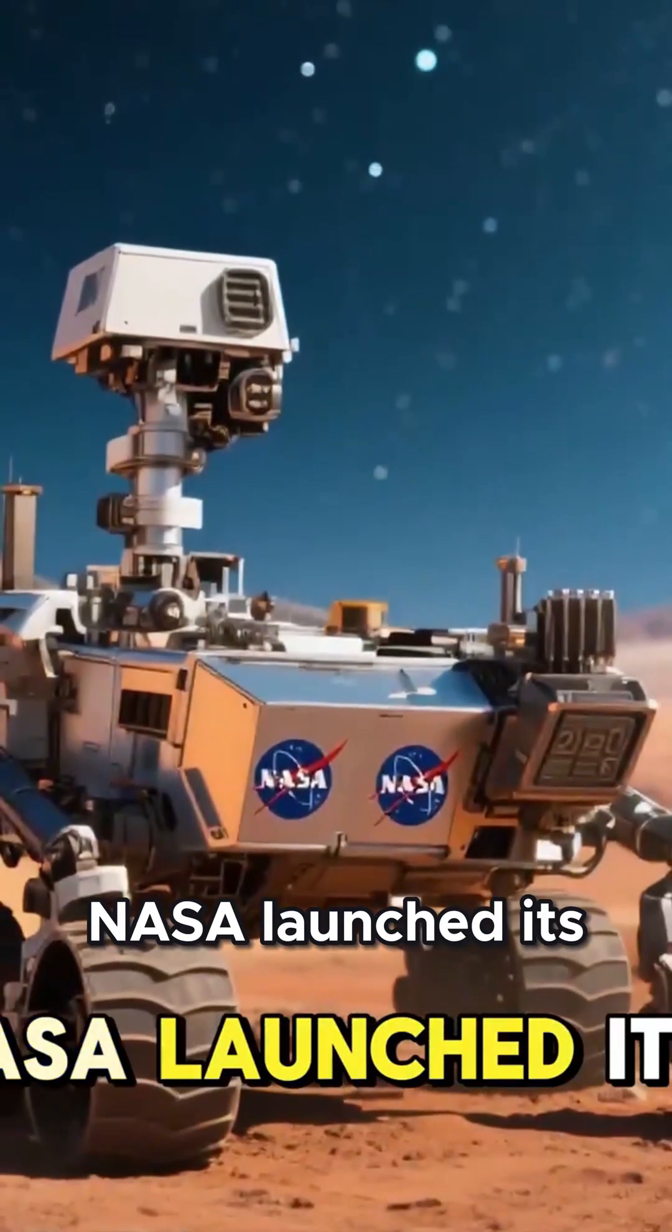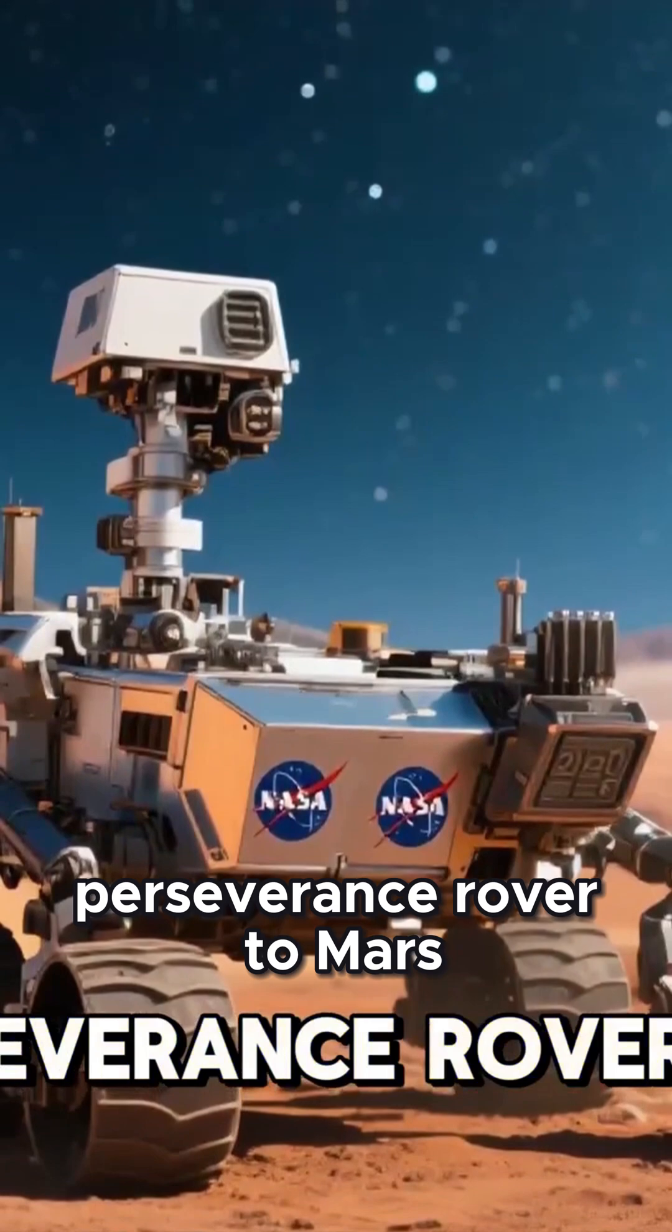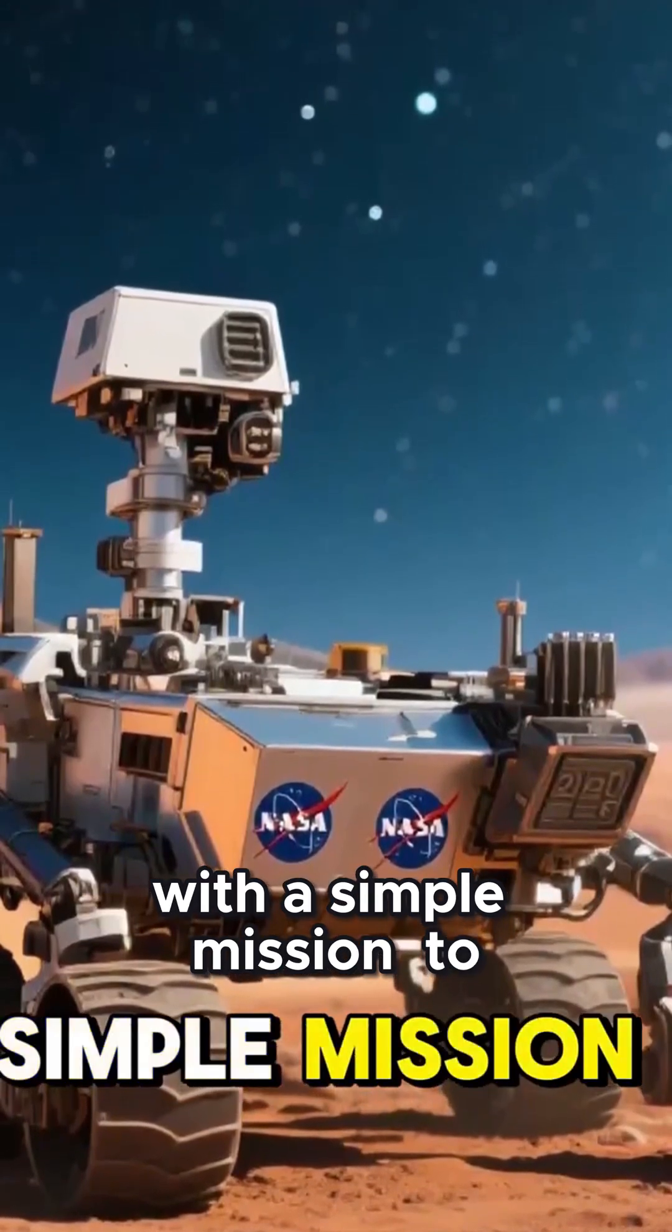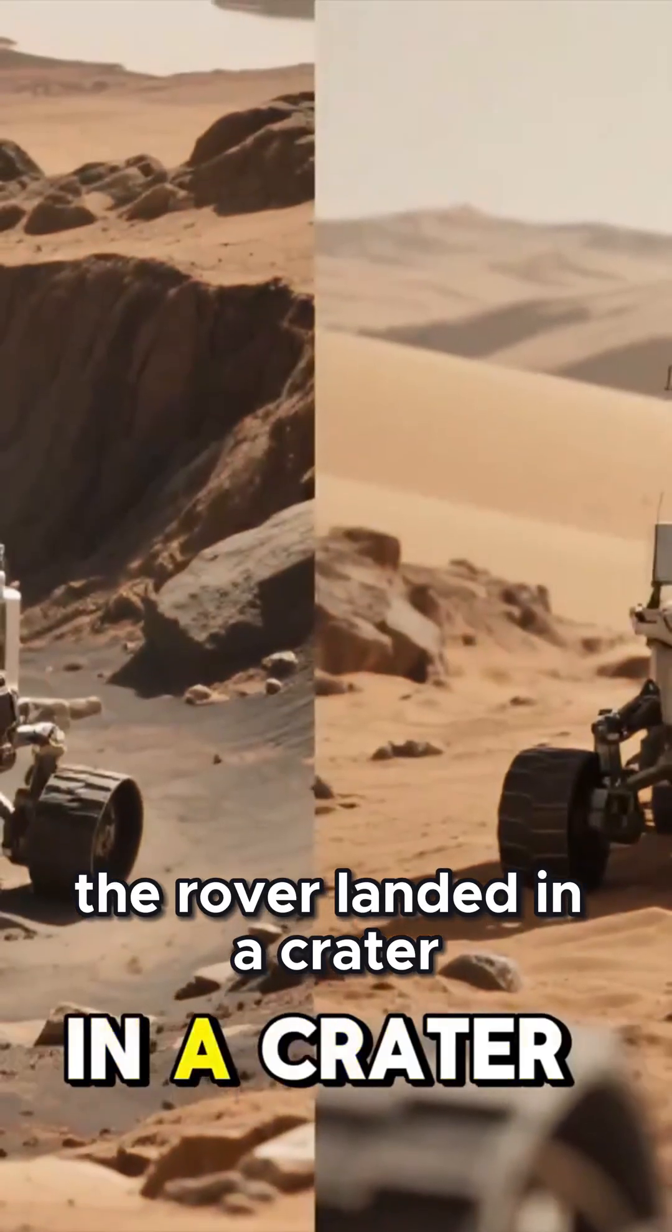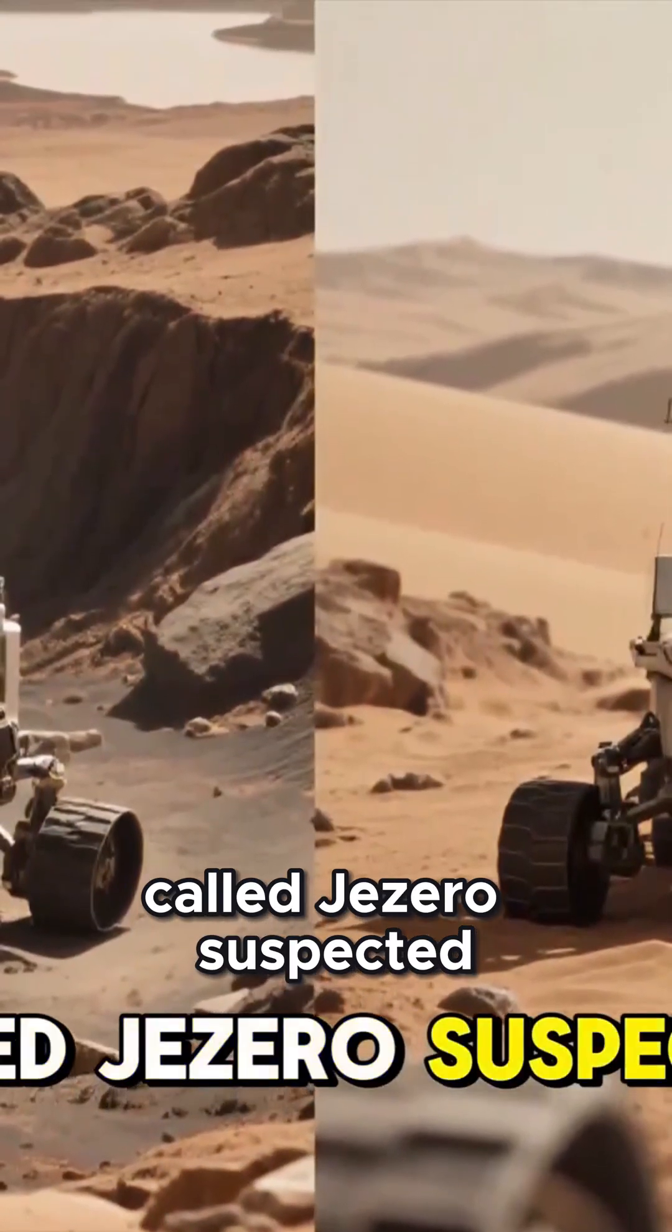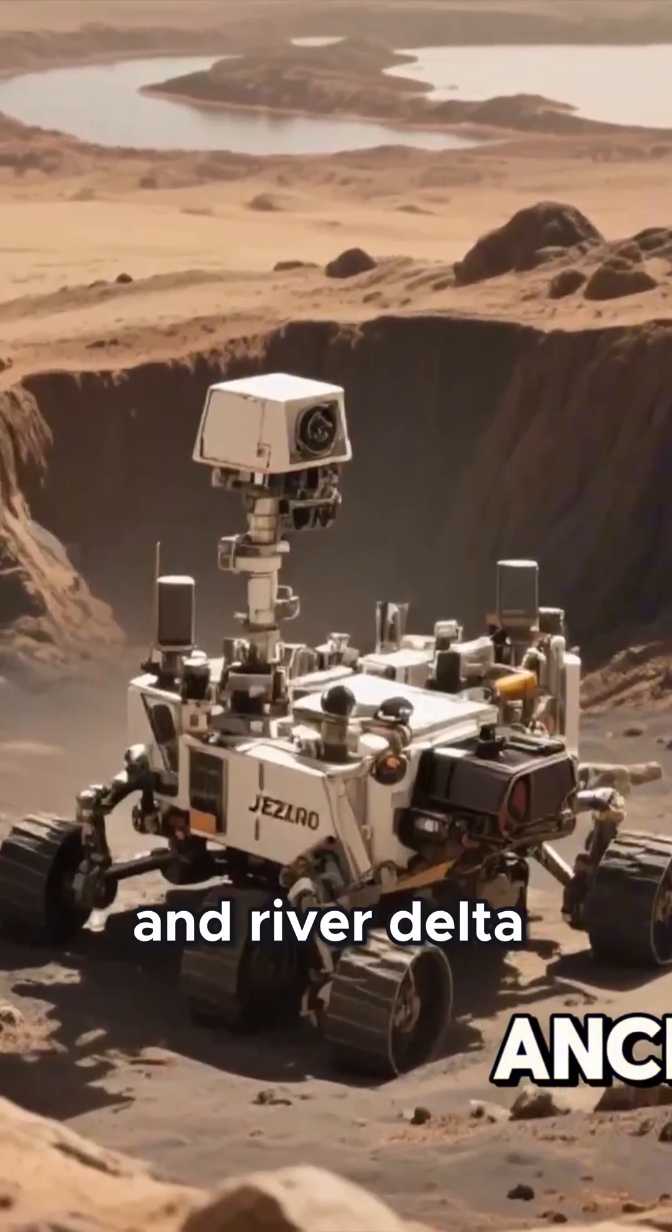In 2020, NASA launched its Perseverance rover to Mars with a simple mission: to find signs of ancient life on the planet. The rover landed in a crater called Jezero, suspected to be an ancient lake and river delta.